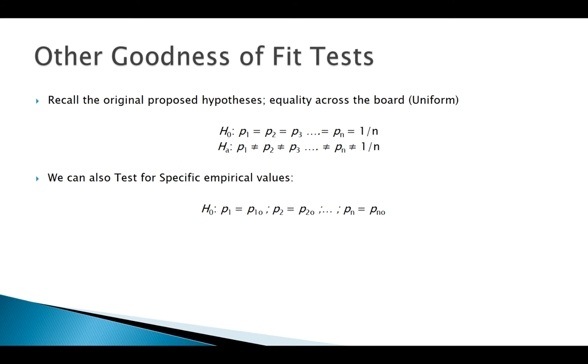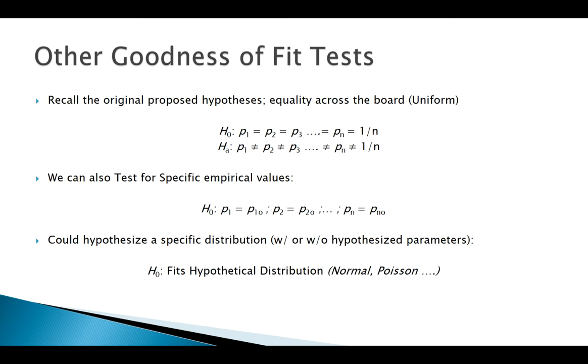We can say the proportion in this group equals some number, the proportion in this group equals another number, and so forth. You also can run a goodness of fit test to look at some sort of specific distribution. For any of these distributions that we've looked at, the normal is common. Lots of times we want to know does the data fit normality, Poisson distribution, whatever distribution you want to test.